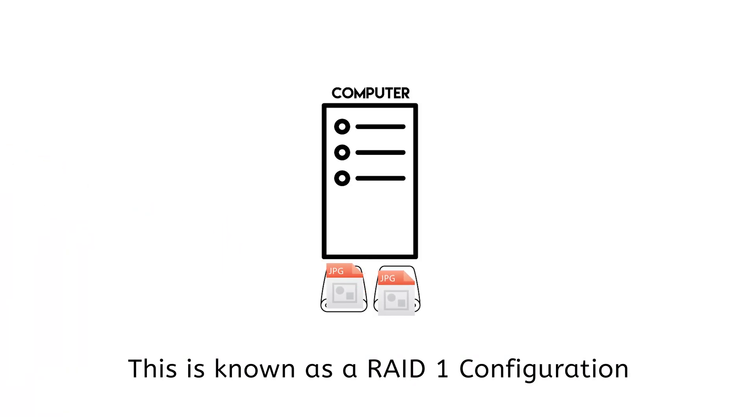Redundancy protects your files in case of a single or multiple hard drive failure, and this can be achieved in various different ways. First, you can choose to install two drives onto your main computer. This is the most cost-effective way as it doesn't involve any additional hardware other than that extra drive. When you place a file onto the first drive, the computer will automatically clone that file onto the second drive, providing you peace of mind that if the first drive fails, you have a second copy right on your computer.